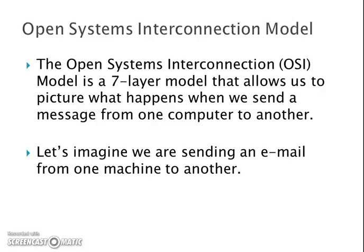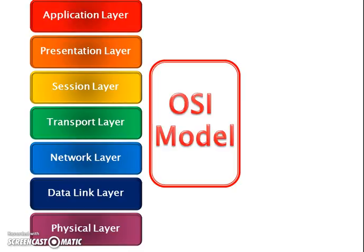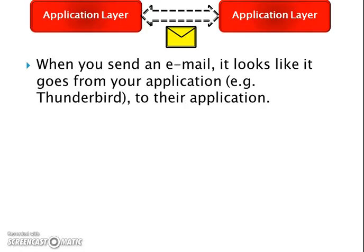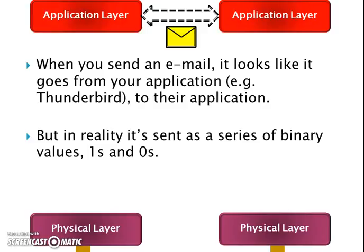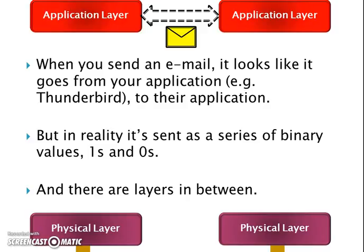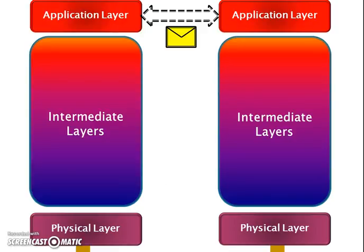The Open Systems Interconnection model is a seven-layer model that corresponds exactly to what we've been talking about. So let's imagine we were sending an email from one machine to another. This is our OSI model. It looks to us, if I send an email to you, like Thunderbird is talking to Thunderbird. But in reality, it's a series of ones and zeros sent across network lines on the physical layer.